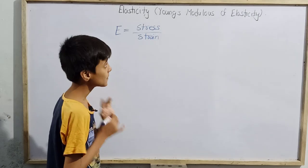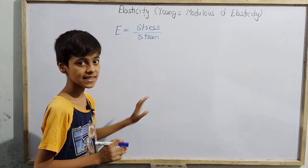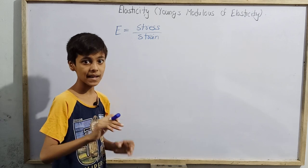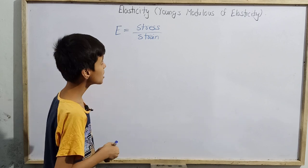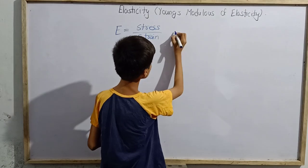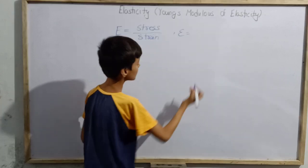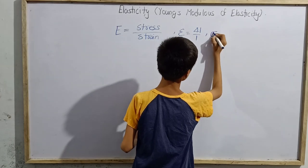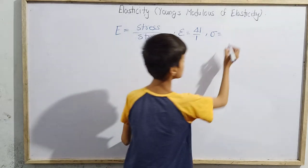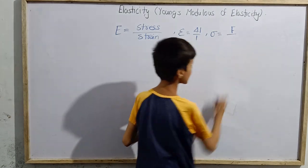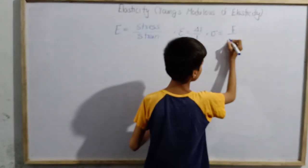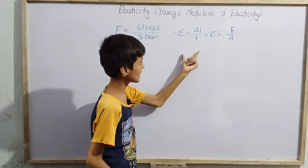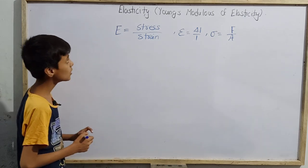Now the question is: what is Young's Modulus of Elasticity? To understand this, let us suppose a wire of length L. Imagine two equal forces are applied in opposite directions on that wire, so the wire length will change. The strain in the wire will be ε = ΔL/L, and the stress σ equals the restoring force F divided by the cross-sectional area A.